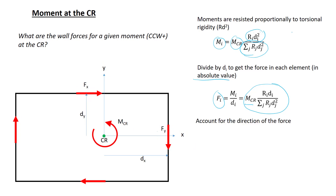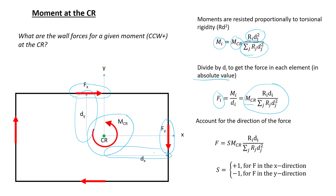Looking at the forces and moment on the diagram, the counterclockwise moment is resisted by a positive force in the x direction times a positive distance in the y direction. It's also resisted by a force in the negative y direction times a positive distance in the x direction. There's a flipping of signs here, which we can capture in an expression using the term s, meaning the sign. This term is positive for a force in the x direction and negative for a force in the y direction.